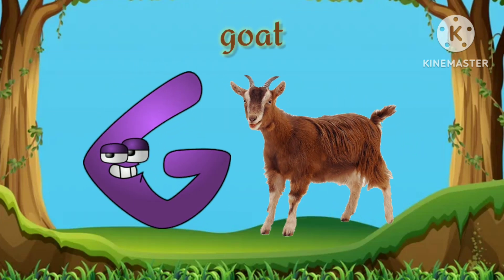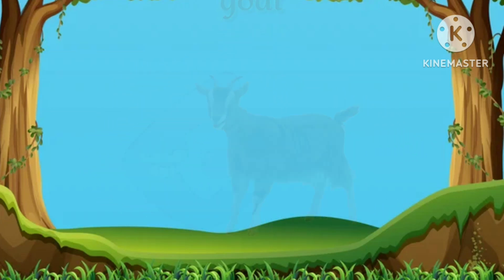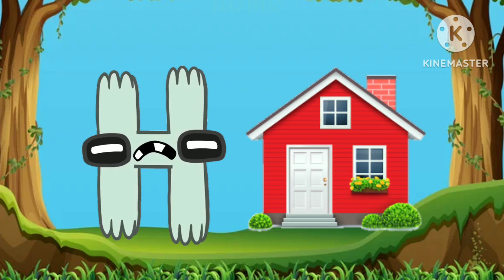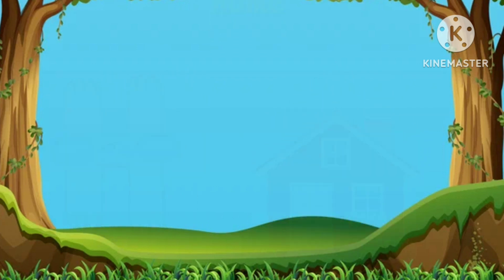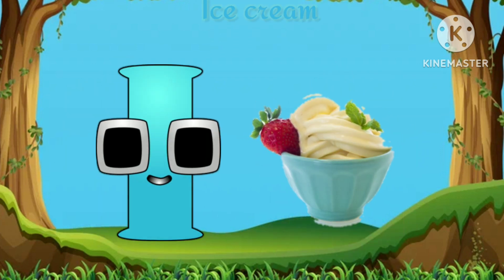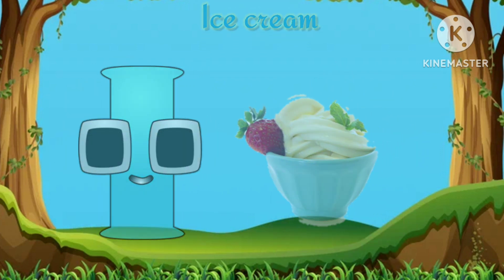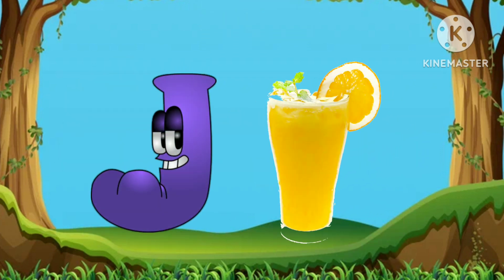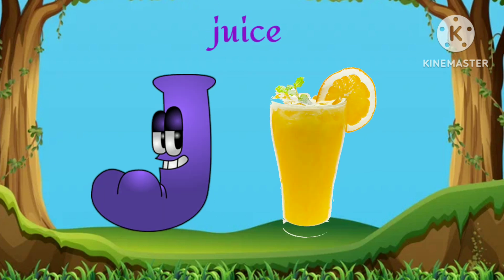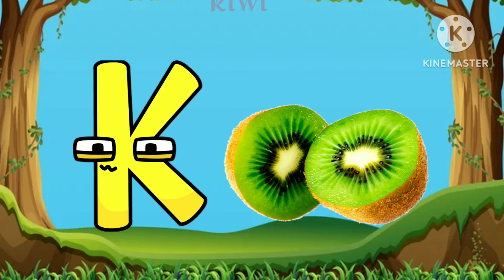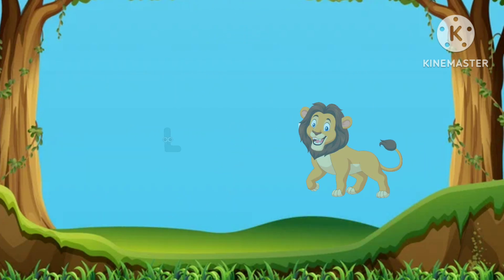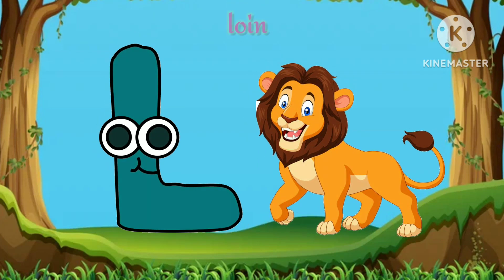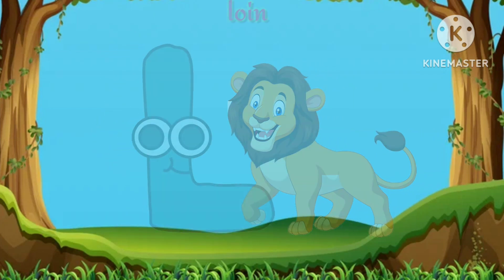G. G for goat. H. H for home. I. I for ice cream. J. J for juice. K. K for kiwi. L. L for lion.